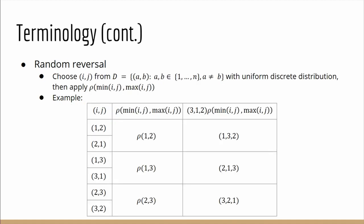A random reversal is also an action on the permutation and is done by choosing i,j from D as defined here with uniform discrete distribution and then applying ρ_min(i,j),max(i,j). So for example when n is 3, these are six possible i,j's you have and if our permutation is (3,1,2), then these three are the possible outcomes.